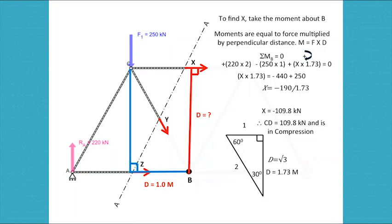The negative value is significant in truss analysis. If you remember earlier, I stated that we assumed that the force in CD was in tension and we drew the arrow pointing away from the joint. As it turns out, our assumption was wrong. This means that the member is in fact in compression as the arrow should be reversed and drawn towards the joint. Therefore, CD equals 109.8 kN and is in compression.